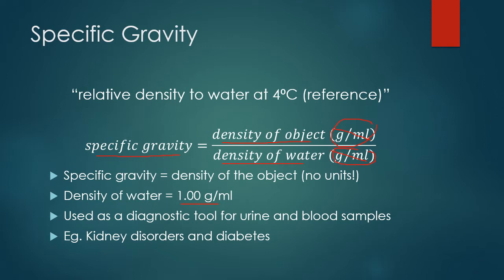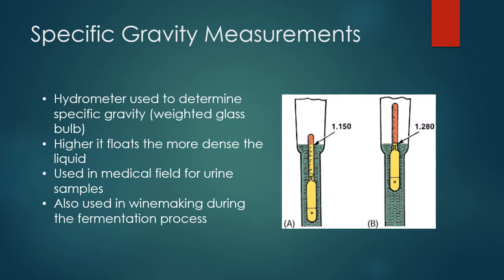Specific gravity is often used as a diagnostic tool for urine and blood samples — it can test for kidney disorders and diabetes. A hydrometer, which is a weighted glass bulb, can measure specific gravity. When placed in a sample, the bulb floats higher in denser solutions because the dense material sinks, pushing the bulb upward. In a less dense solution, the hydrometer sinks lower because it becomes more dense than the surrounding liquid.